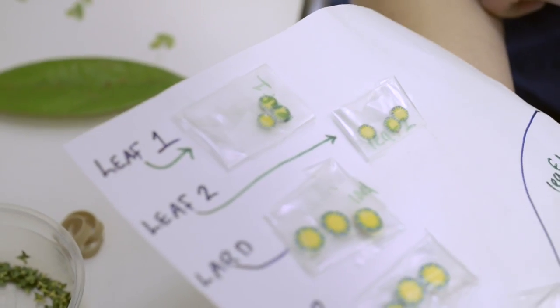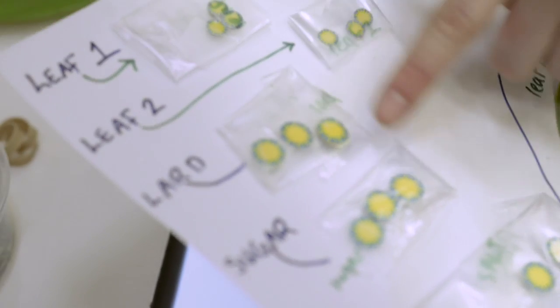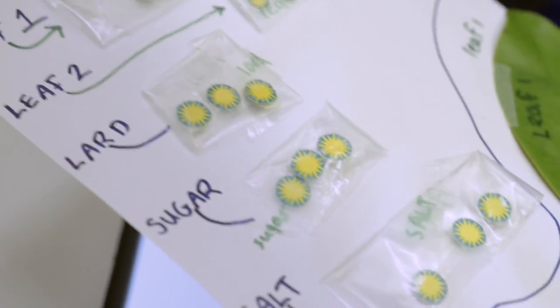These first two smaller sunbursts have a little circle of leaf sandwiched inside of them. Then we have lard, sugar, and salt. And these pieces of paper have been submerged in the solutions.